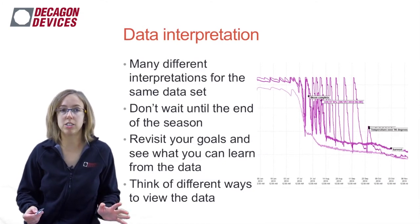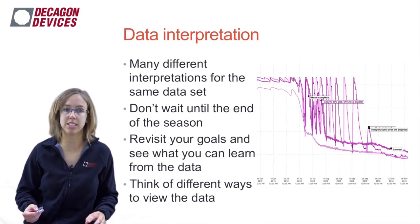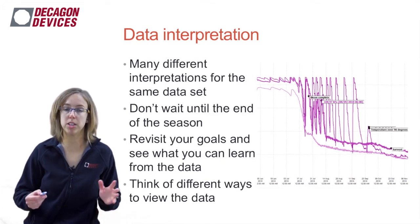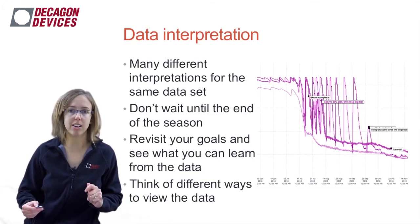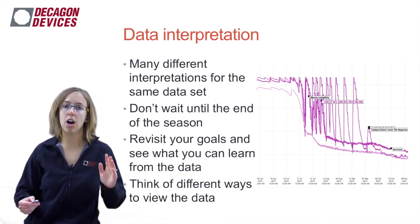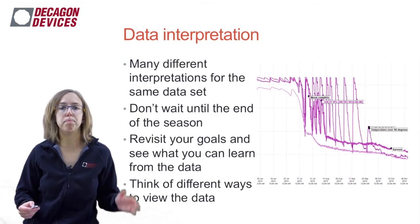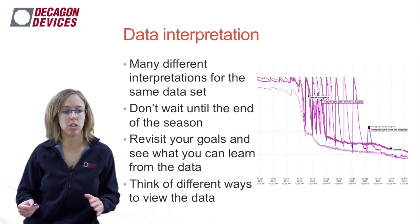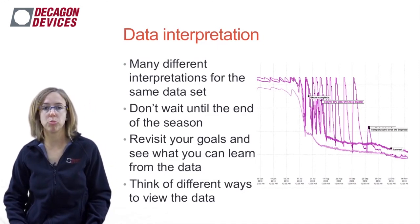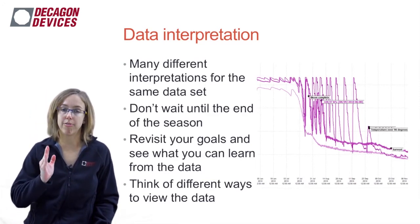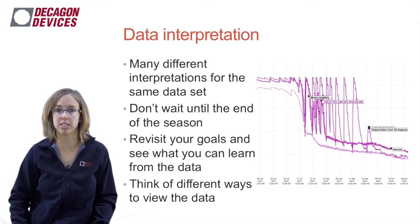There could be many interpretations for the same data set. If you have the capability to go out into the field and see what's going on, do that and make notes on your data set of what happened — maybe there was a big storm. Write that on your data set so you can tell yourself what happens to soil moisture during events. Make sure you're revisiting your goal and ensuring those data are helping you accomplish it. We're going to go through a couple of different ways to view data that will help us understand what's happening when a first look doesn't tell us.